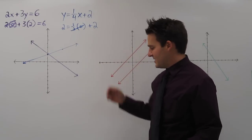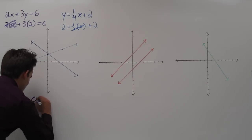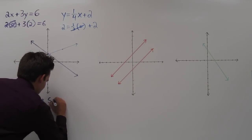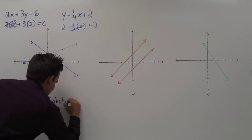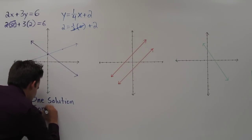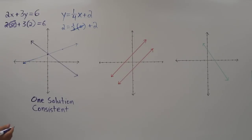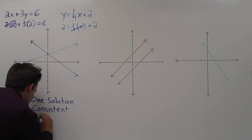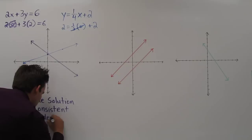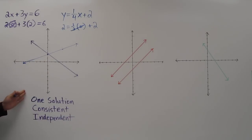So we say this system of equations has one solution. We call it consistent and we also call it independent. So this is all vocabulary to describe this system of linear equations.